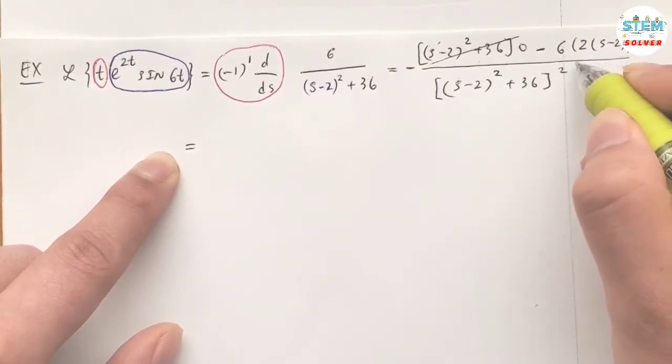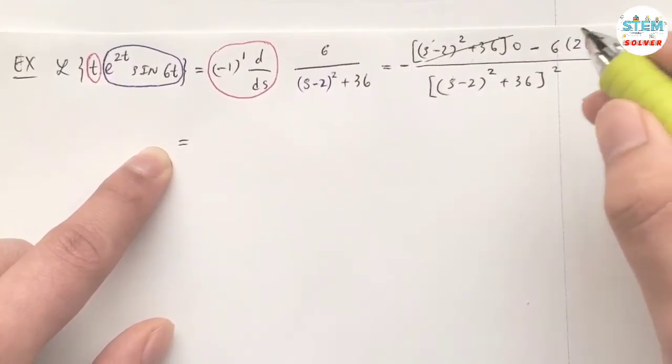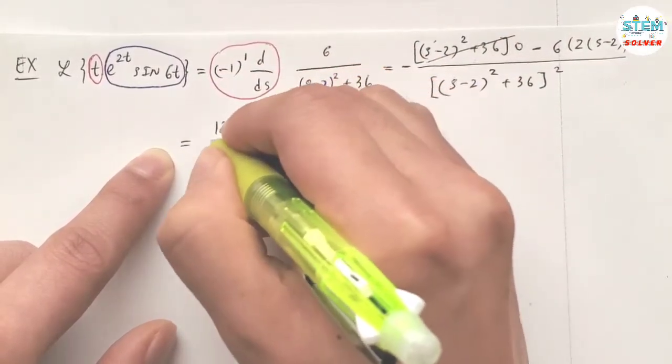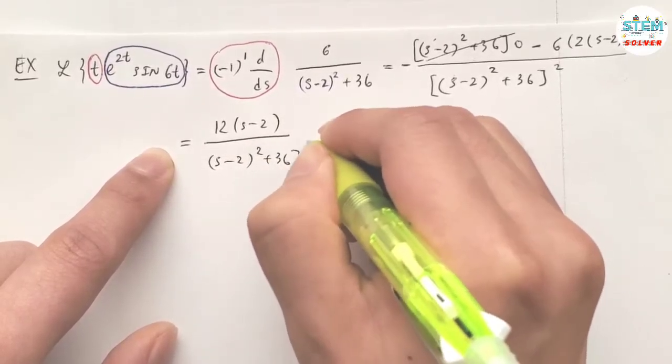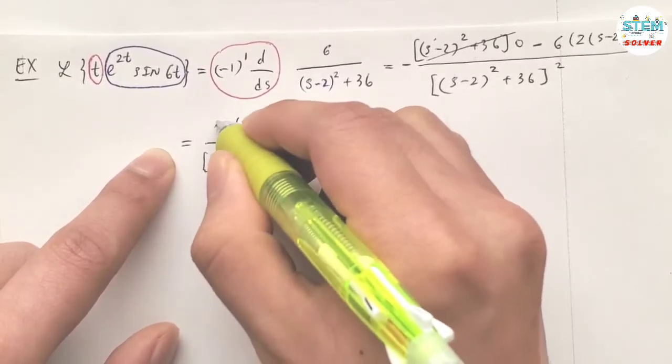6 times 2 is 12, s minus 2, over s minus 2 squared, plus 36, squared.